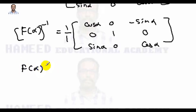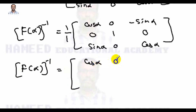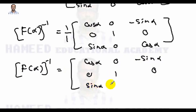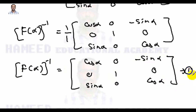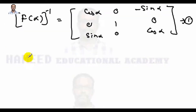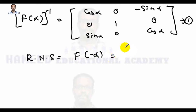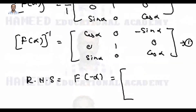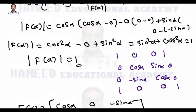So f(α) inverse equals one over one times the adjugate, which gives [cos α, 0, -sin α; 0, 1, 0; sin α, 0, cos α]. This is the left-hand side. Next we are going to evaluate the right-hand side, which is f(-α).